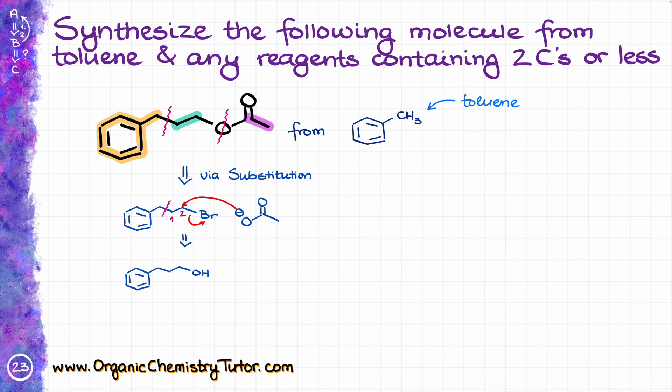Or another possibility — since my bromine is sitting on the less substituted carbon — I could also make it via the radical hydrohalogenation of an alkene, so an alternative predecessor is going to be an alkene. When it comes to making my carbon-carbon bond, I'm going to have two different approaches: the blue method using the Grignard reaction and an epoxide, and the green method using reactions of acetylene and alkyl halides via substitution reactions.